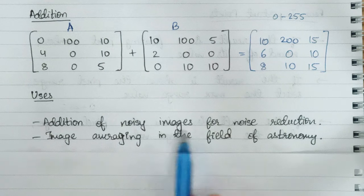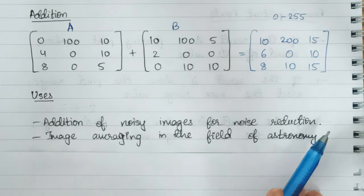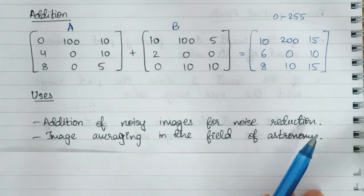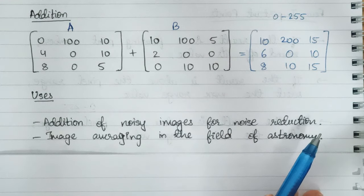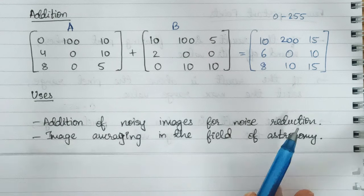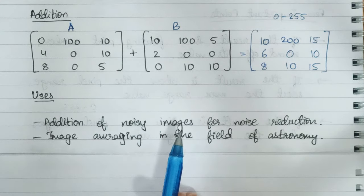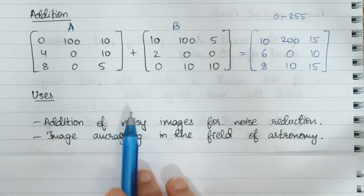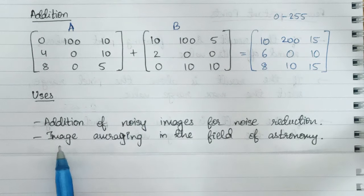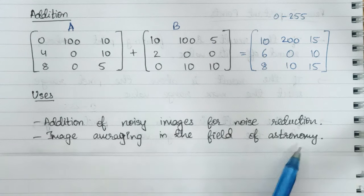The uses of addition include the addition of noisy images for noise reduction. For noise reduction, a noisy image is added to a noiseless image, and many such images are added and then averaged out so that the standard deviation gives the normal image. The next application is image averaging in the field of astronomy.